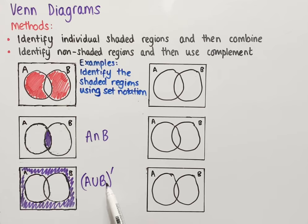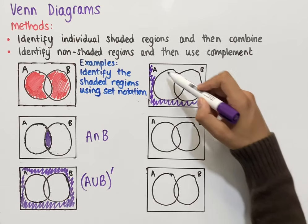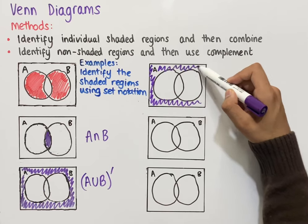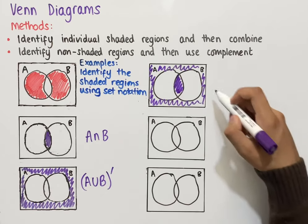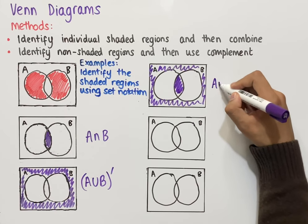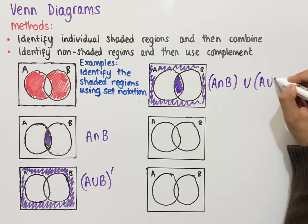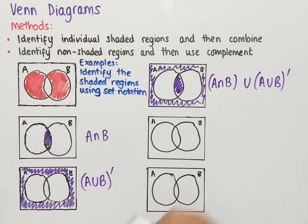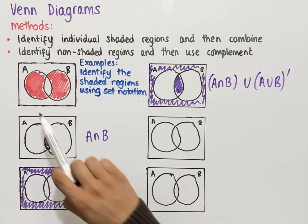To combine A intersect B with (A union B) complement we use union, since that combines the two shaded regions. This gives us all of the outside region as well as the middle region, so the set notation for the non-shaded combined region is: (A intersect B) union (A union B) complement.